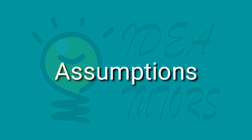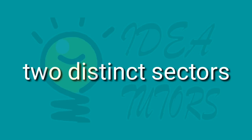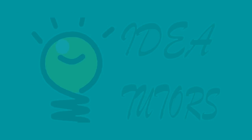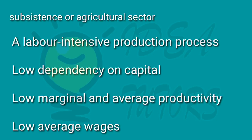The model assumes an economy contains two distinct sectors. Firstly, there is the capitalist sector, characterized by a capital-intensive manufacturing process relying on the use of reproducible capital, higher average wages, higher marginal and average productivity, and higher demand for labor.